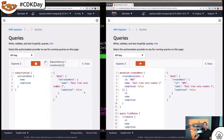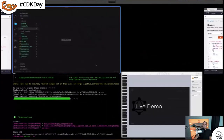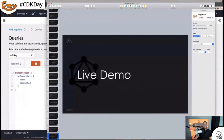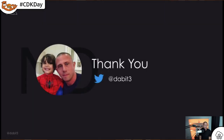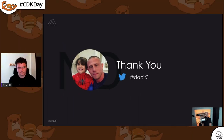That was it — pretty simple to create an API from scratch in just a couple of minutes. Thank you so much for checking this out. My name is Nader Dabit; I'm @dabit3 on Twitter. On my GitHub you'll find this project — it's called AppSync CDK Backend. Go to github.com/dabit3 and you'll see the CDK AppSync Backend project at the top of my repos. I hope you learned a little bit and I'm looking forward to seeing the rest of the talks for CDK Day.